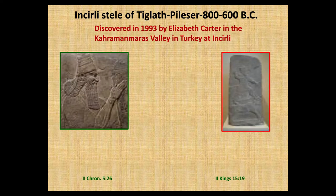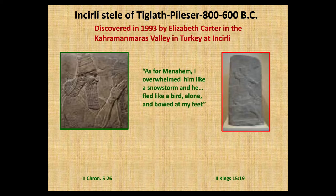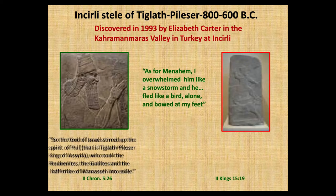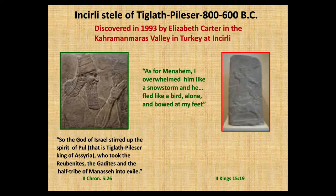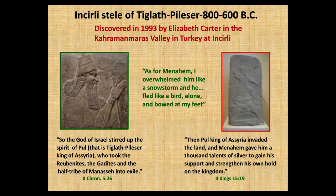Other Assyrian inscriptions and finds — this one from Tiglath-Pileser dates from around 800 years before Christ, discovered in 1993. King Menahem of Israel and Pul are taken in captivity by the Assyrians, according to these inscriptions. You can read about this in 2 Chronicles chapter 5 and also 2 Kings chapter 15. An amazing confirmation of Bible history through these Assyrian monuments.